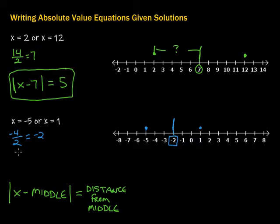So we have the absolute value of x minus the middle, which we found to be negative 2. And we're going to be able to simplify that, right? But I'll leave it like this for now. And that's equal to how far is it? The distance from the middle. So how far is it from here to there or from there to there? Well, from negative 5 to negative 2, it's 1, 2, 3. We can count it out or we can just subtract. Either way is fine. Both ways, we get 3.